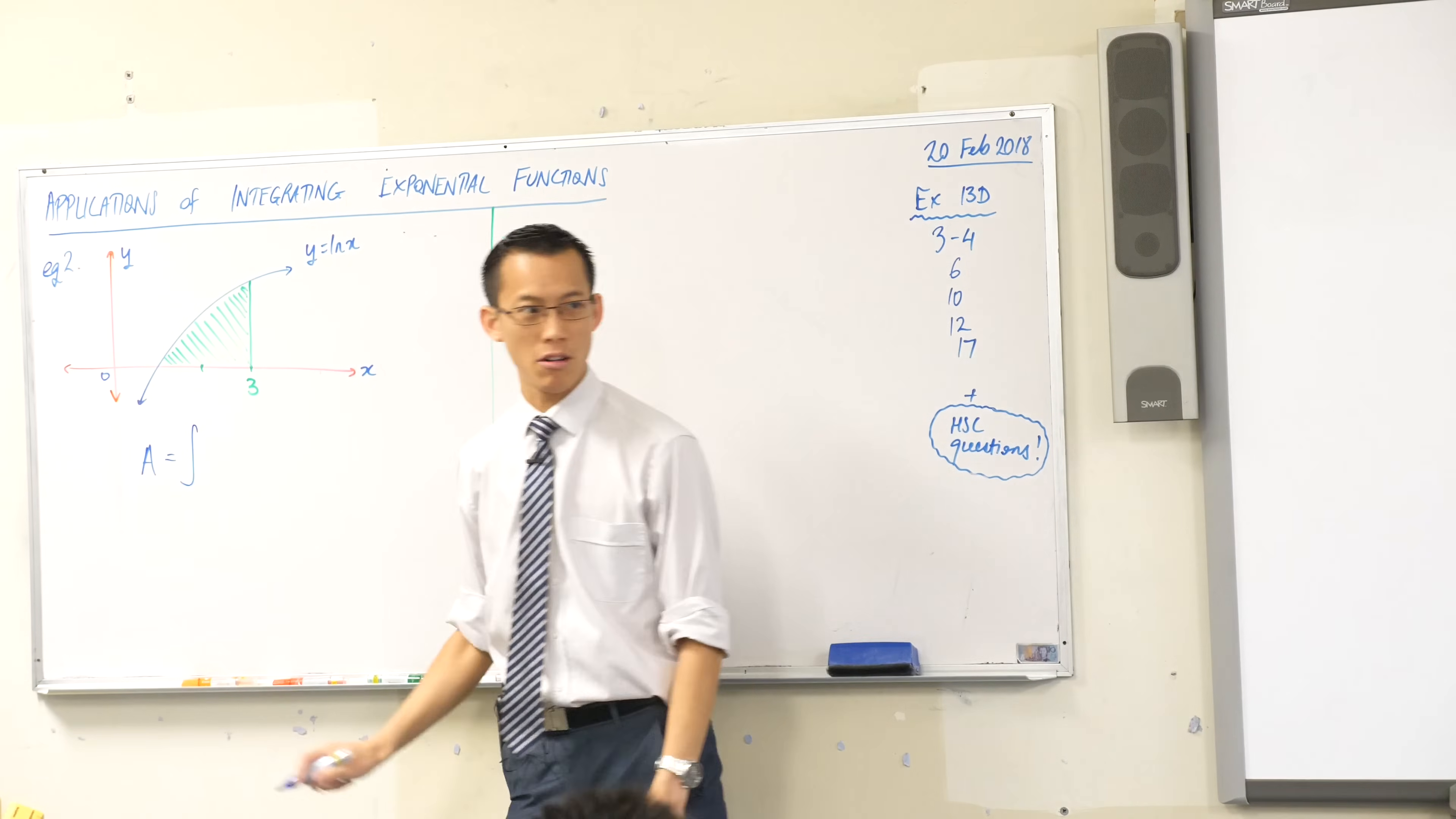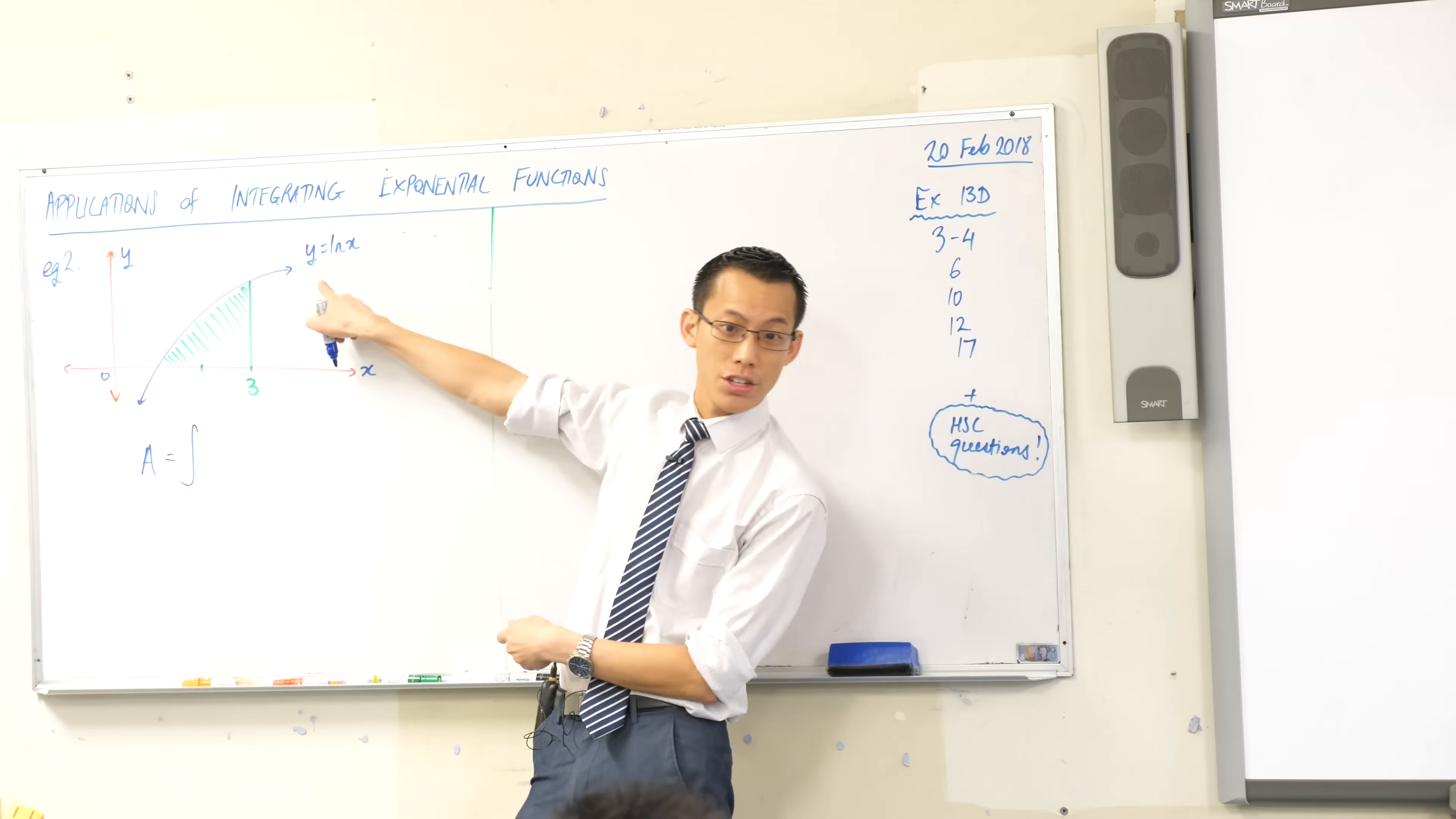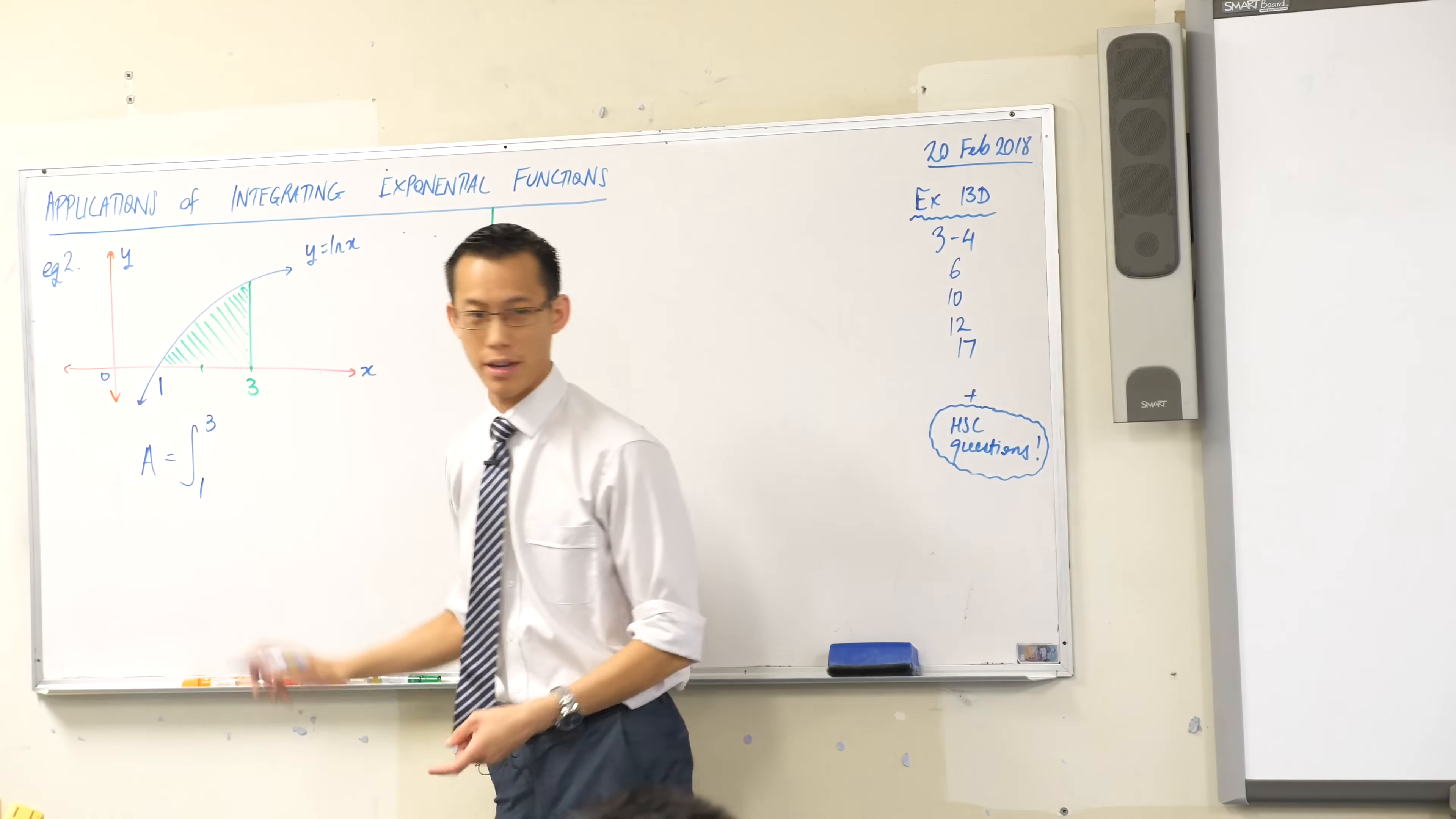Can you tell me what my upper and lower boundaries should be? One to three, very good, because even though I haven't told you, because you know what the function is, you can work out what the x-intercept is over here, that's a one, so therefore you start at one, you end at three, no problems.